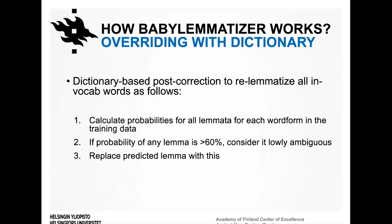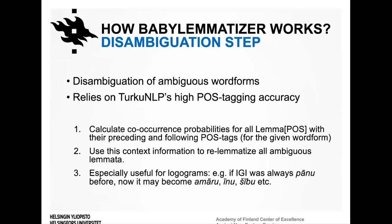The first post-processing step is to override all predictions for in-vocabulary words, minimizing the effect of mislearned character-level relationships. We calculate the degree of ambiguity for all lemmatizations in the training data and create a 'master glossary' — a file of word form spellings with low ambiguity. A spelling is considered low-ambiguity if a certain lemma plus POS label constitutes over 60% of all labels assigned to it in the training data.